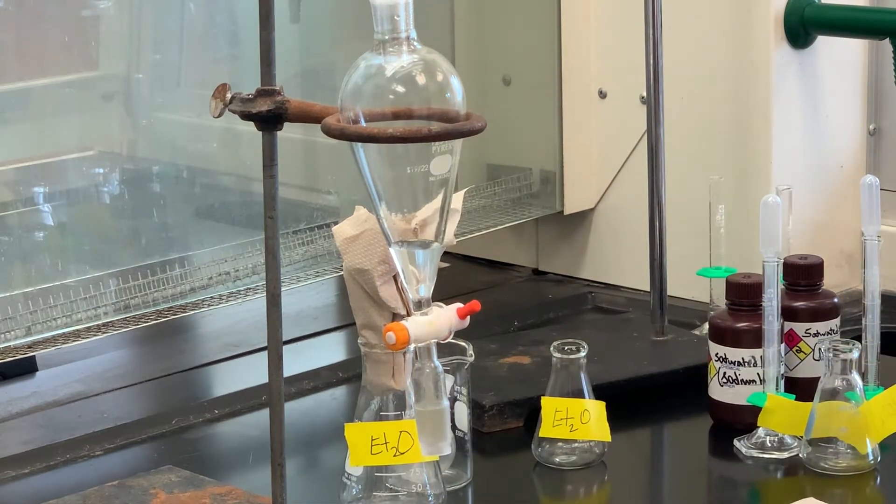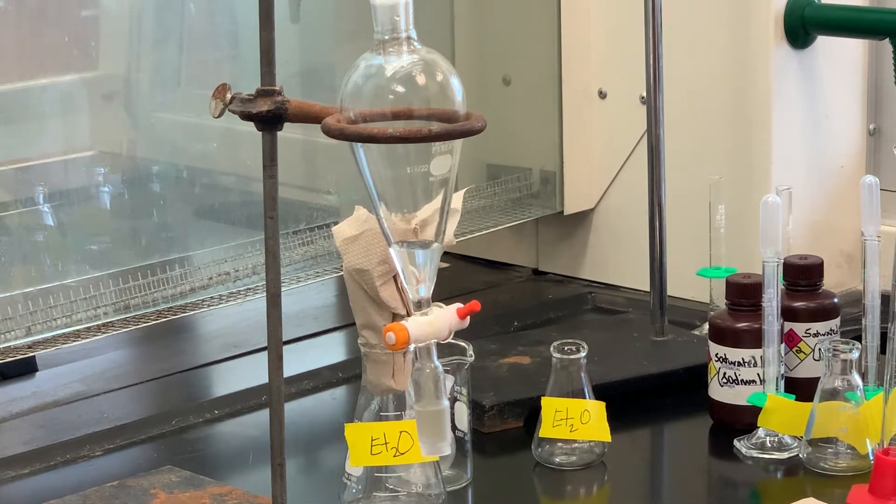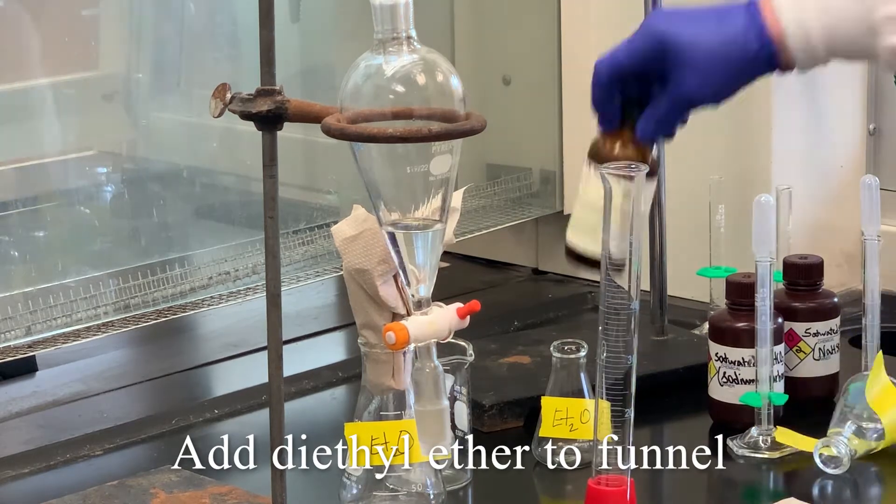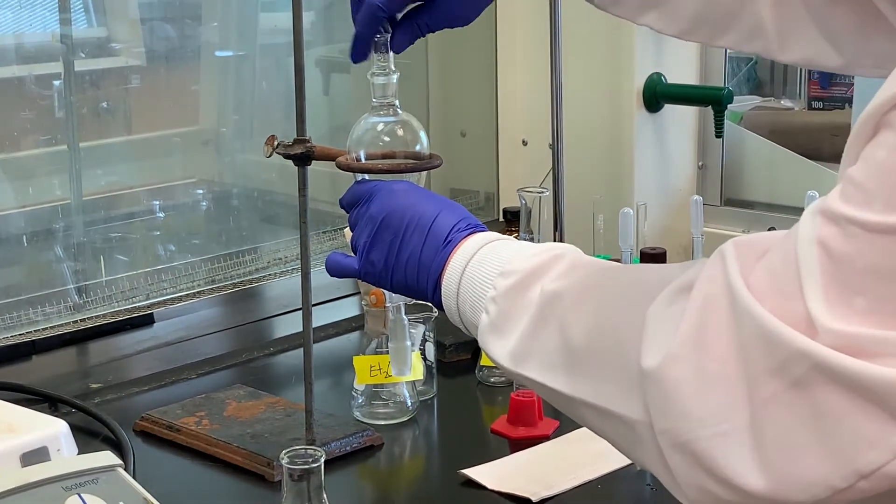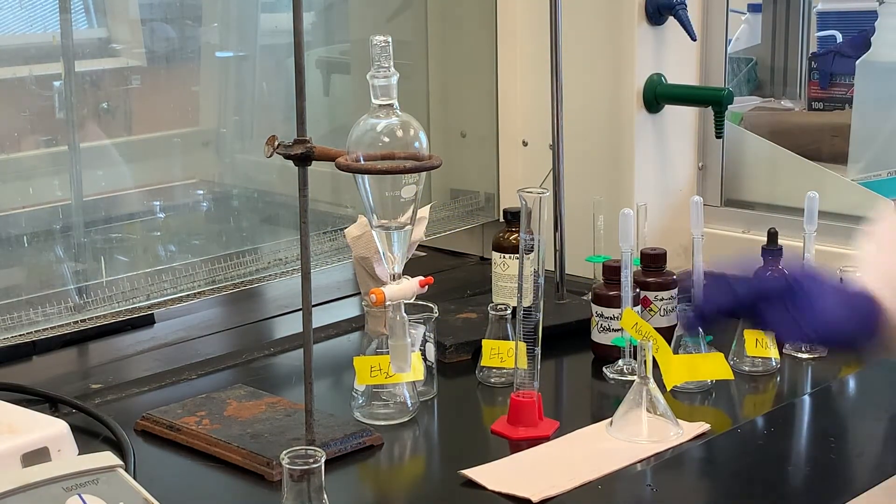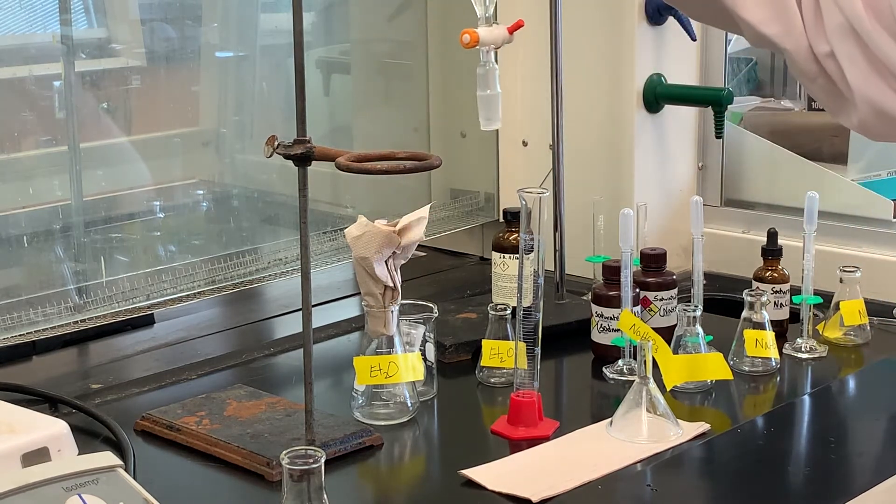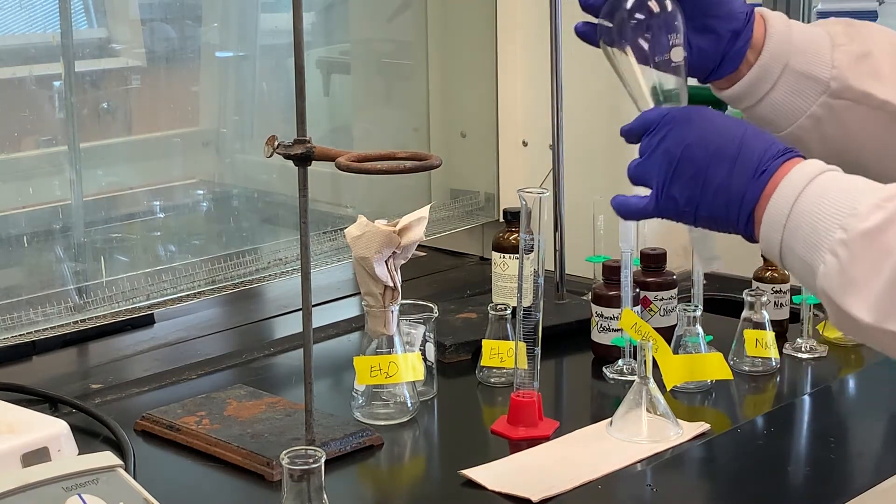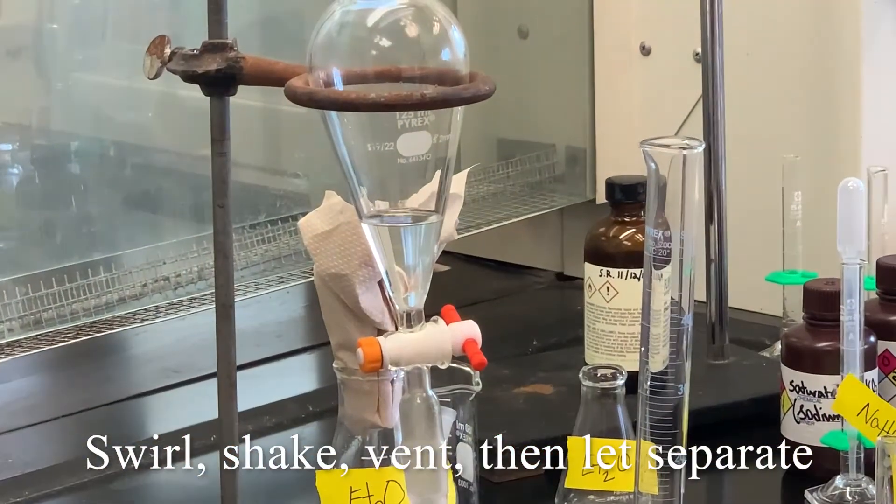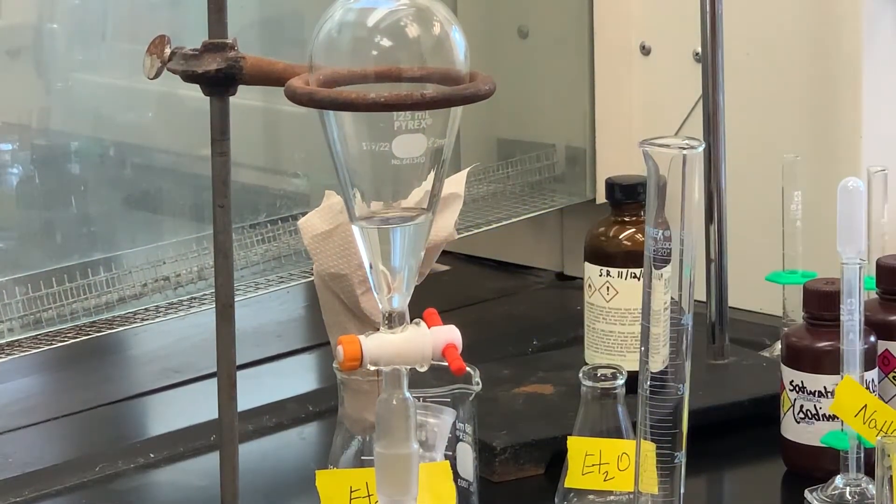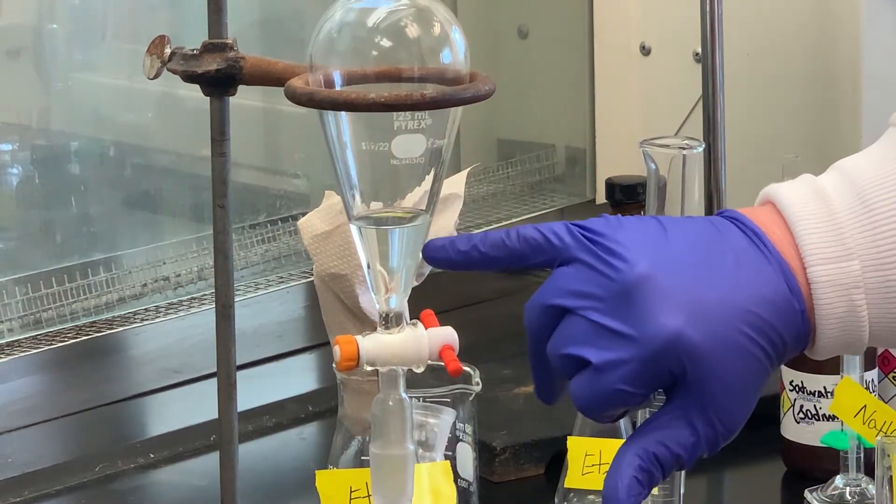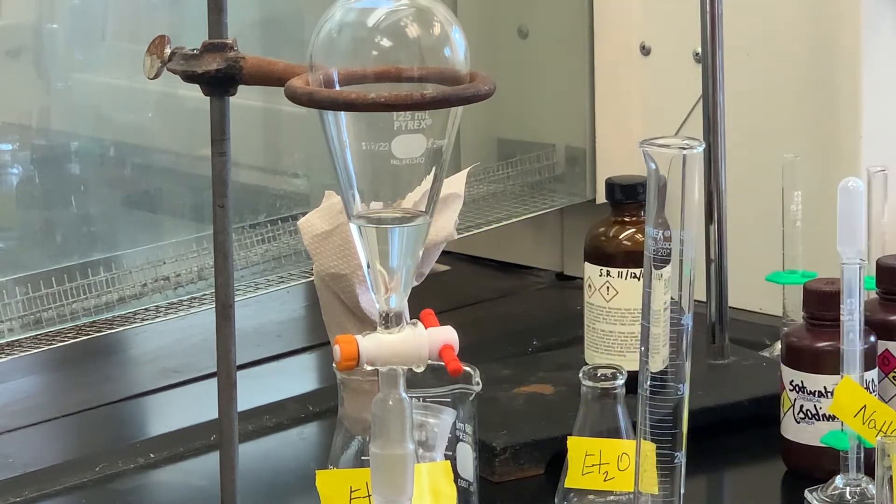And then we'll use another five or so mils of the diethyl ether. Always when you insert the stopper, just give it that twist. Now I haven't shaken this yet, but you should be able to see two distinct layers. It's very difficult to see. I'm going to swirl this. It is a very fine line, but you can see right there is where the aqueous and the ether layer separated.